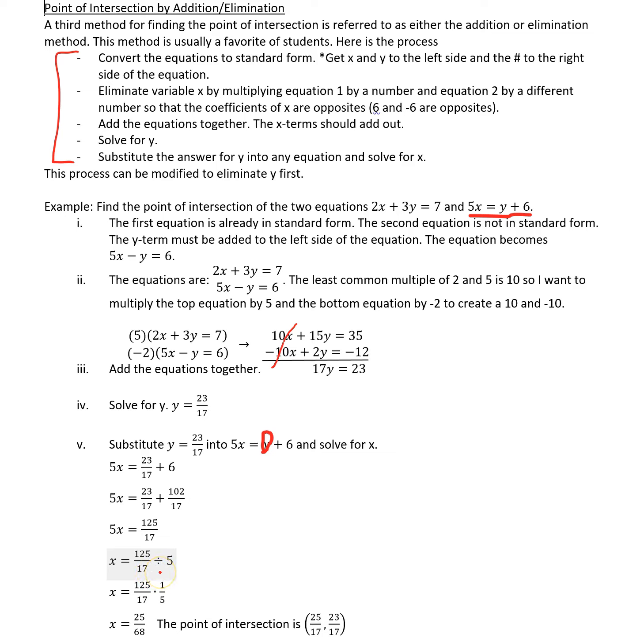Right now I have 5x equals that 125 over 17. I need to solve for x by dividing by 5. When I divide by 5, I remind myself that I actually need to multiply by the reciprocal of 5, which is 1 fifth. So 125 will reduce down, that one will reduce to 25, and the 5 will reduce to a 1. So multiplying straight across, I find out that x equals 25 over 17. So the point of intersection is the ordered pair 25 over 17 and 23 over 17.